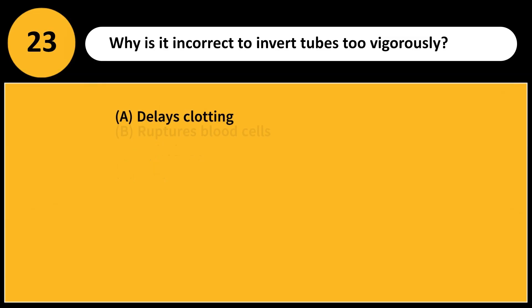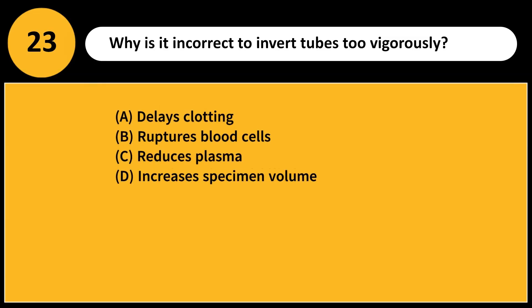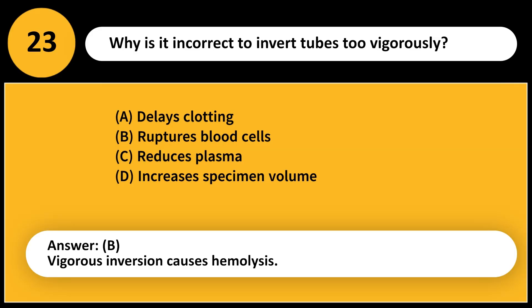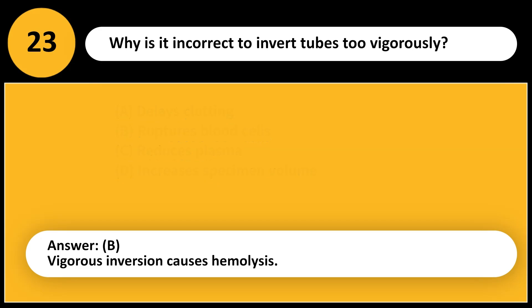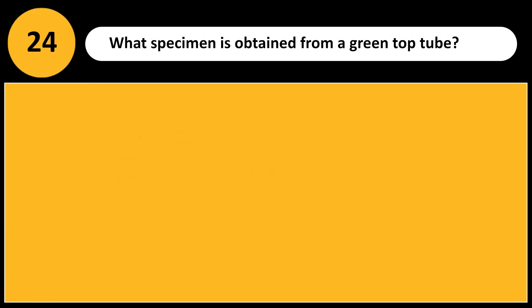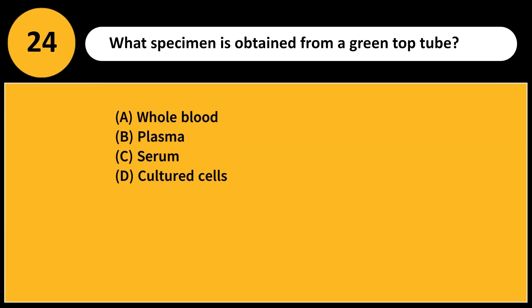Why is it incorrect to invert tubes too vigorously? A. Delays clotting. B. Ruptures blood cells. C. Reduces plasma. D. Increases specimen volume. Answer: B. Vigorous inversion causes hemolysis.